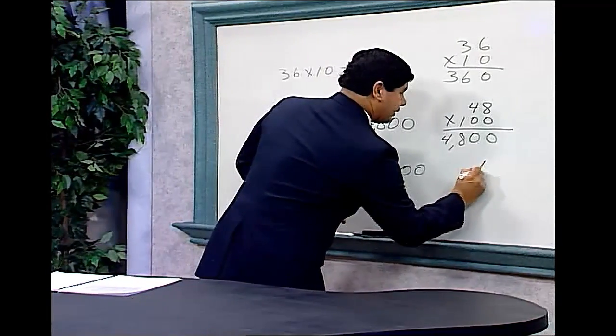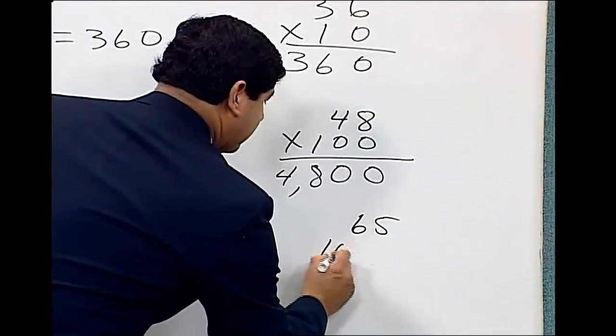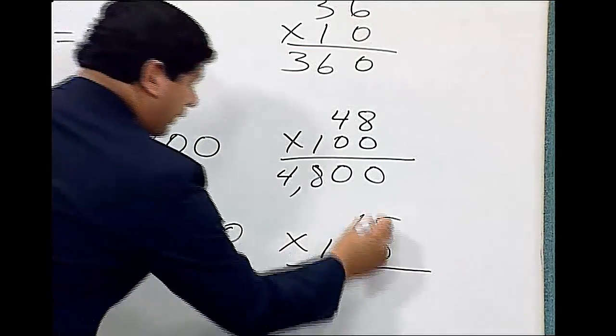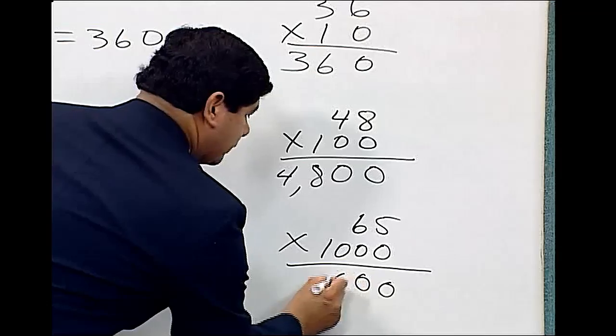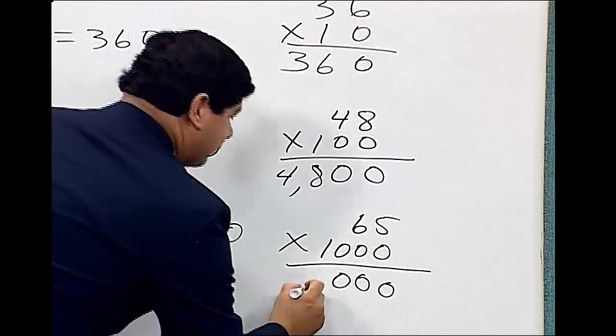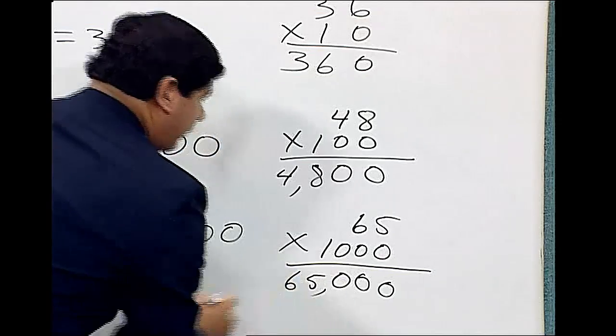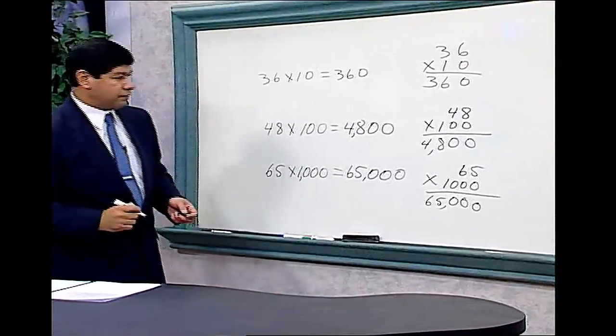And again, we can demonstrate that as 65 times 1,000. Let us multiply. Let's drop our three 0s. And 1 times 5 is 5. 1 times 6 is 6. And that gives us 65,000.